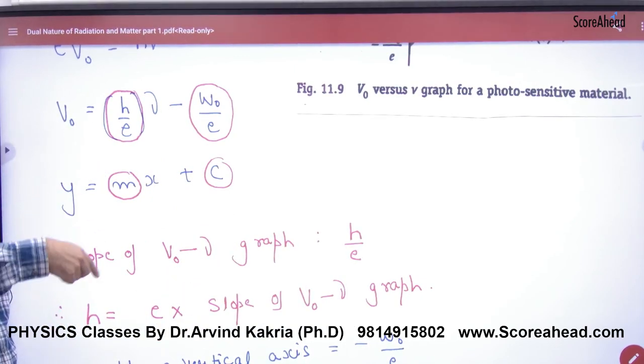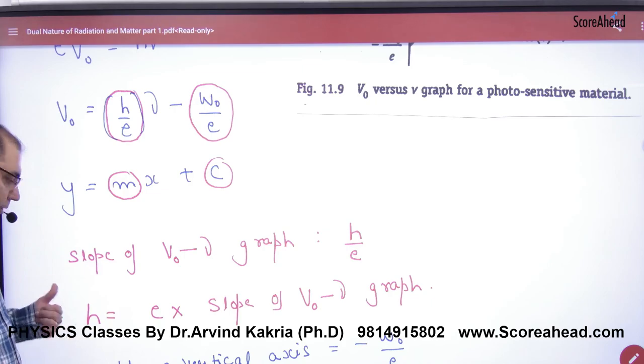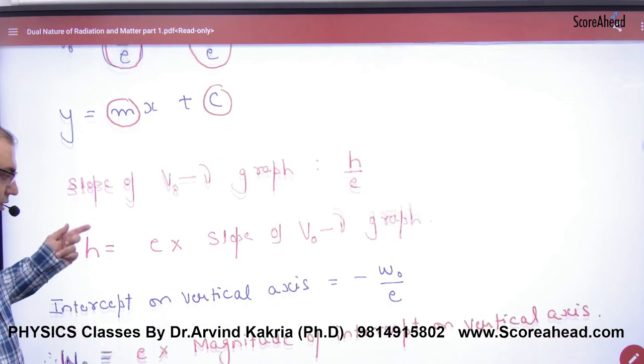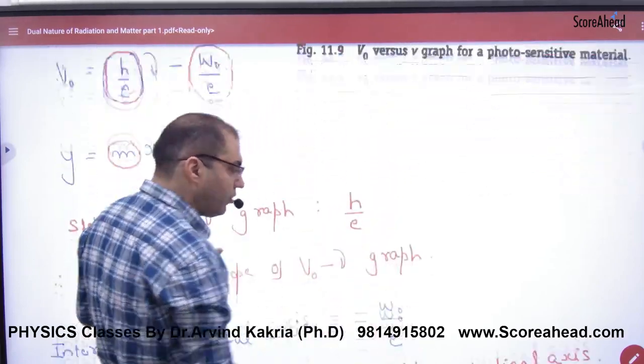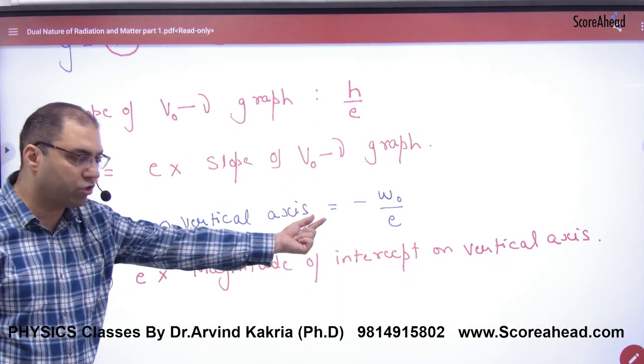In questions, the slope will be given. Multiply by E to get Planck's constant. And the intercept? It's minus work function by E.